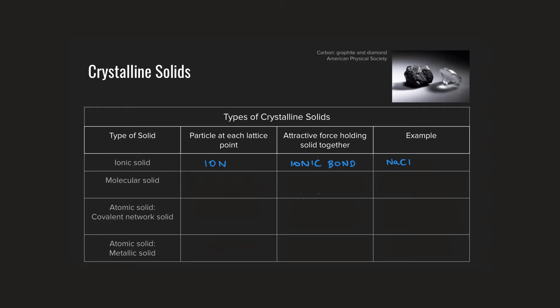That explains a familiar substance like table salt, but what about a substance like sugar? Glucose, C6H12O6, is obviously not an ionic compound. The molecules themselves are held together by covalent bonds, but what holds the molecules together within the solid itself? Thinking about glucose, C6H12O6, consider the types of intermolecular forces of attraction that exist between those molecules. Glucose has lots of hydroxyl functional groups around the molecule, and those hydroxyl groups are highly polar. As such, we would expect to see hydrogen bonding existing between molecules of glucose.